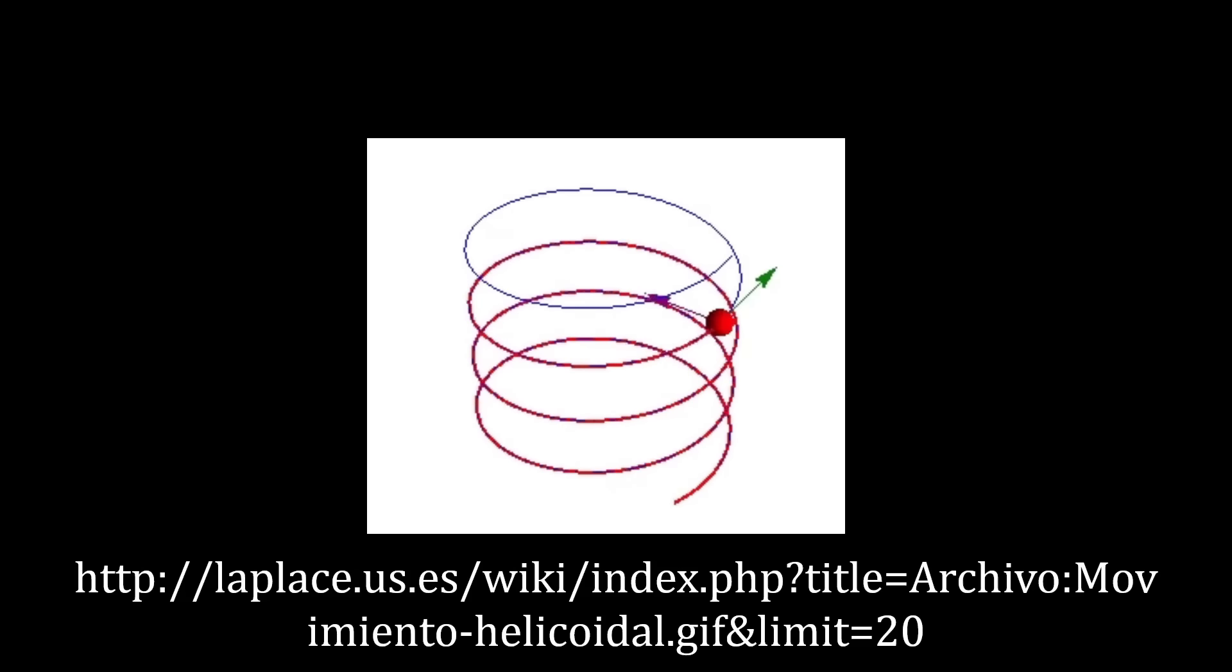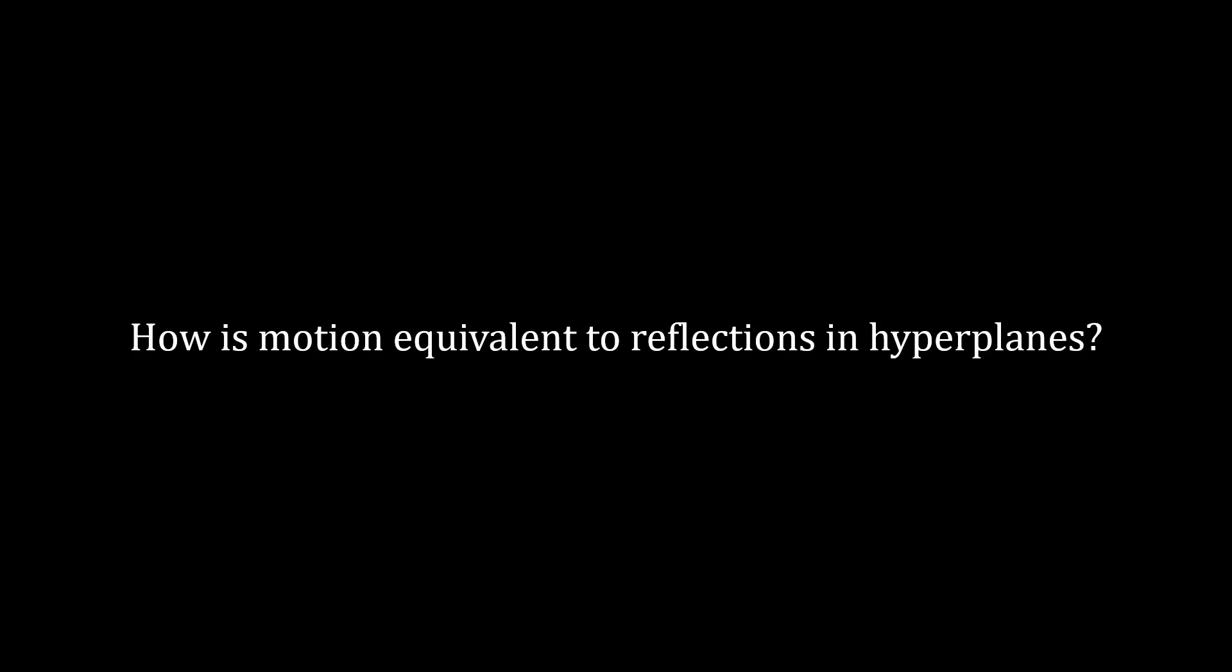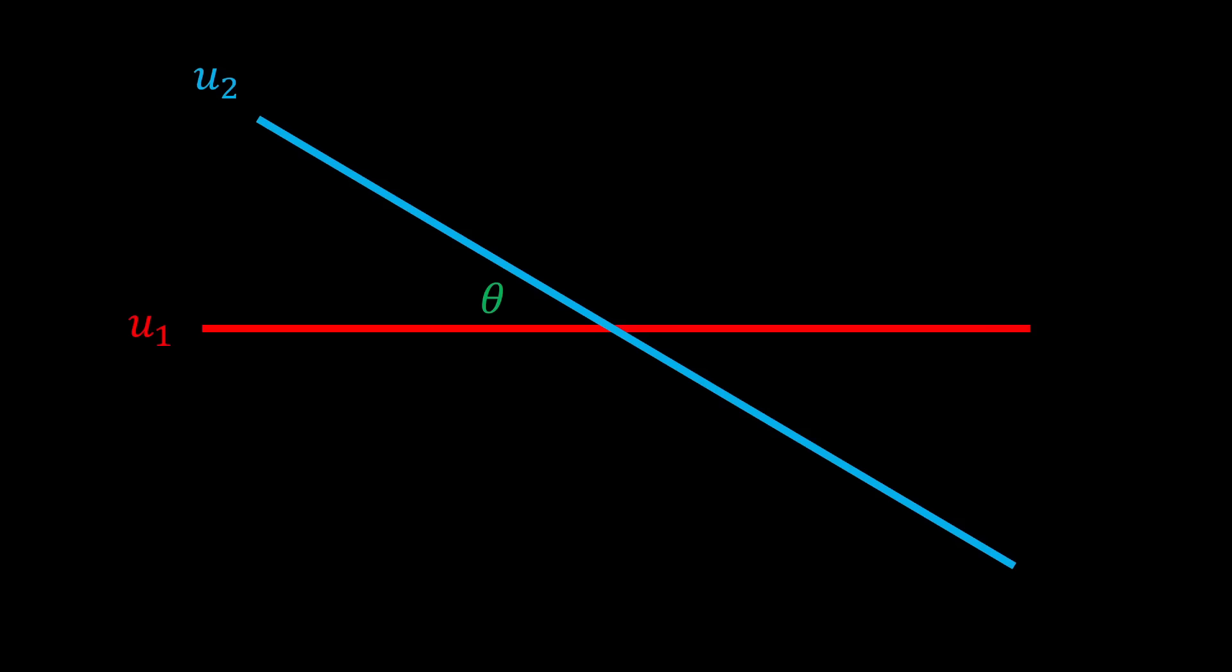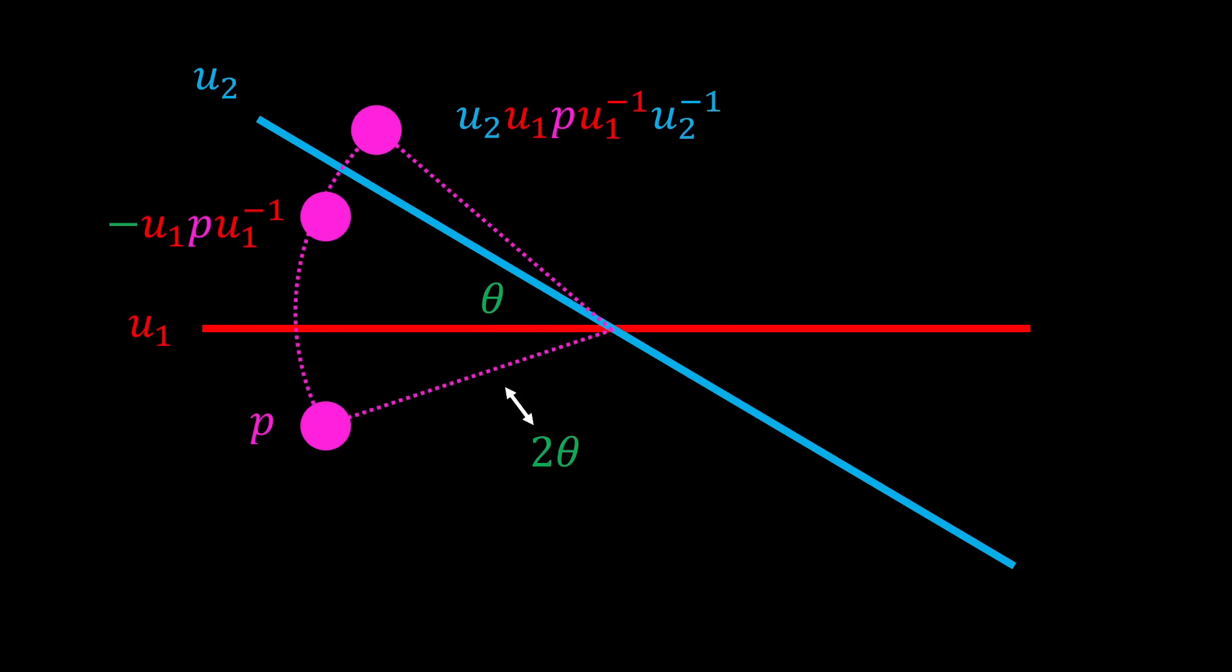But, I'm sure some of you still have a question. How are these motions equivalent to reflections in hyperplanes? Let's look at a two-dimensional example. Imagine two hyperplanes, U1 and U2, with some angle theta between them. Suppose there is some object P in this space. It can be reflected in U1, and then this object can be reflected in U2. Well, this composition of two reflections actually just describes a rotation by 2 theta.